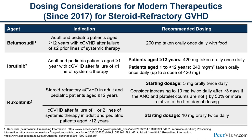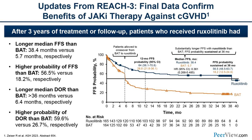Ruxolitinib is FDA-approved for both acute and chronic graft-versus-host disease, with slightly different starting doses for each indication. In acute GVHD, the recommendation is to start at 5 milligrams twice daily, and after three days it is acceptable to increase to the 10 milligram dose, which is the recommended dose for chronic GVHD. A recently presented ASH abstract showed long-term follow-up data from the randomized REACH-3 study, demonstrating the long-lasting benefit patients seem to receive with ruxolitinib in chronic GVHD.